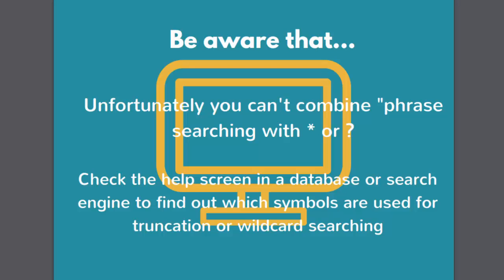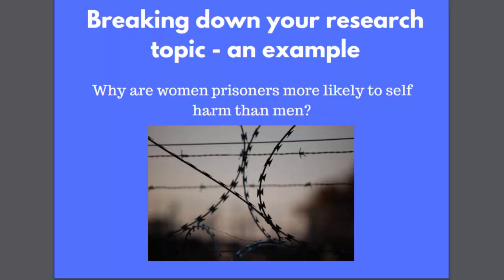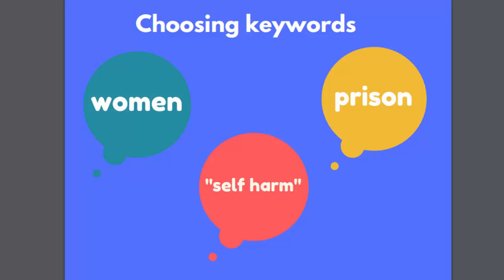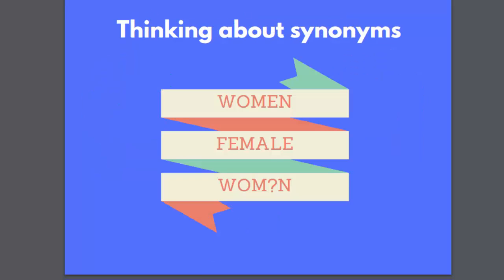If you're not sure which characters to use for truncation or wildcard searching in a particular database, just check the help screen. Now we're going to work through an example of how to get from an assignment title to a set of useful keywords to start your search. Let's take the question: 'Why are women prisoners more likely to self harm than men?' Our first task is to pick out the really meaningful key concepts from this sentence and discard the irrelevant connecting words which we can't search on. The key concepts of this question are women, prison, and the phrase self harm.